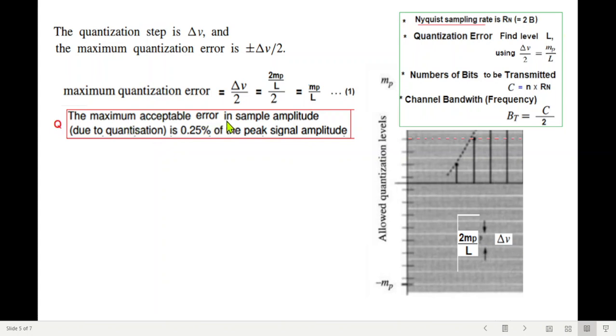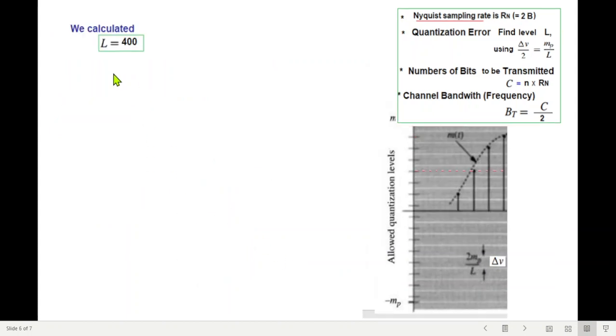Now in the question, the maximum acceptable error in sample amplitude due to quantization is 0.25% of the peak signal. So that means the maximum error which is delta V by 2 is 0.25% of MP, which can be written as 0.25 divided by 100 MP. Both these are same value, delta V by 2. So we will equate both. From equations 1 and 2, equating them we will find L, so L is 400. That means the number of levels for this signal we require is 400 levels.